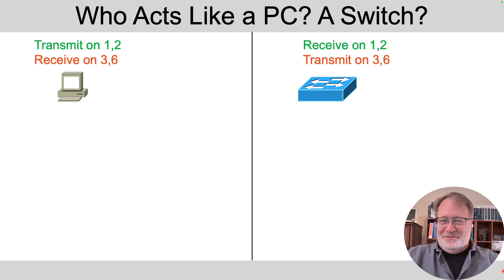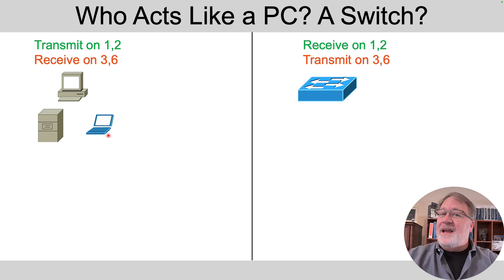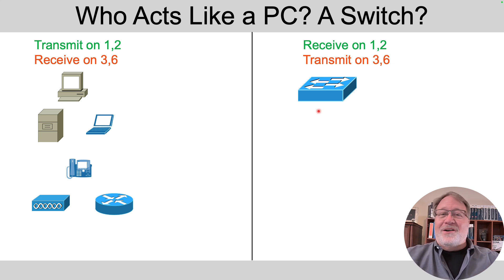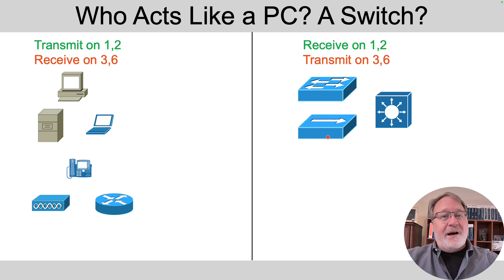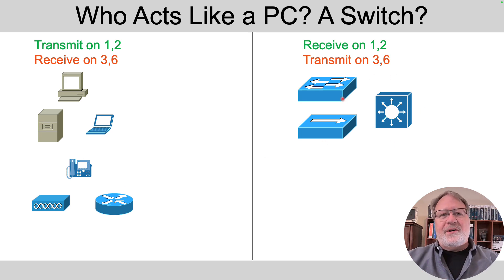A little more review before we get to AutoMDIX. The PC logic applies equally to servers, laptops, routers, wireless access points, and IP phones — they all act the same way in terms of what pins their Ethernet NICs use. The only things that act like switches are switches, and their predecessor the hub. So think: switches in one column and pretty much everything else in the other. If you connect a PC-like device to a switch, a straight-through cable makes sense.